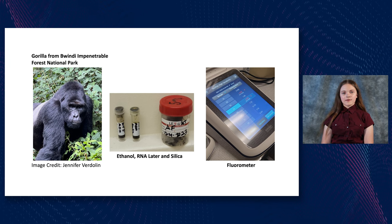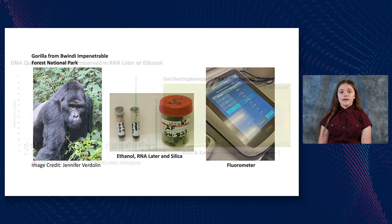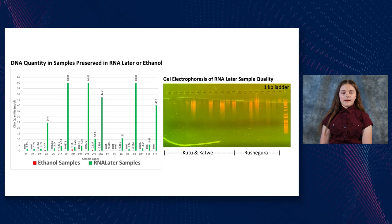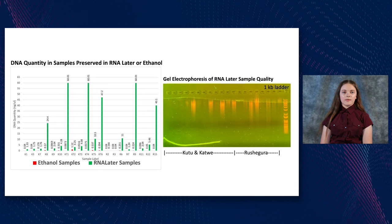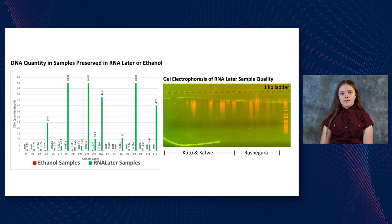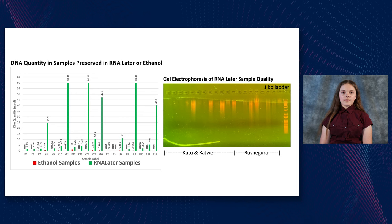We took the purified DNA and measured it in a fluorometer, which measures the amount of DNA using light. The fluorometer showed that the RNA later DNA samples had about 100-fold more DNA than the ethanol samples. We also performed gel electrophoresis on the RNA later samples and found the quality was very high — samples had very long strands of DNA that stuck towards the top of the gel. We hope that in the future researchers can use this data to further research in the conservation of mountain gorillas. Thank you.